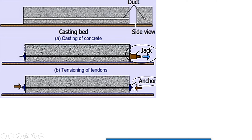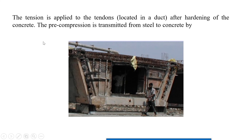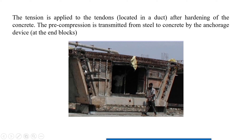Once the sufficient pull is done and anchored, there is a small gap between the tendon and duct. We fill this gap with grout — a slurry of cement and water — for proper bond action. The tension is applied to the tendons located in a duct after hardening of the concrete, and the pre-compression is transmitted from steel to concrete by anchorage devices. This is done for large structures where pre-stressing in a bed is not practical — mainly site-based post-tensioning.